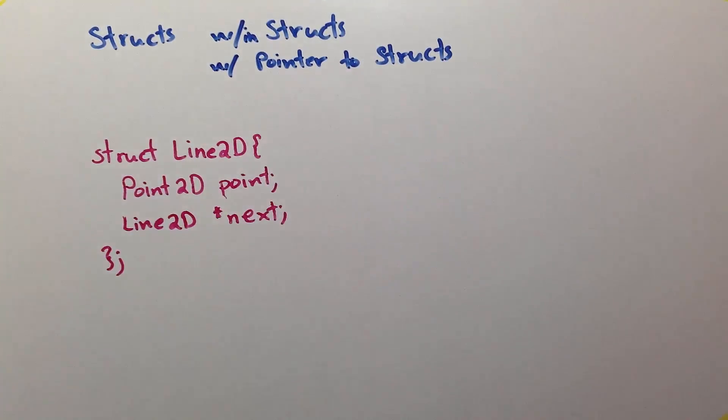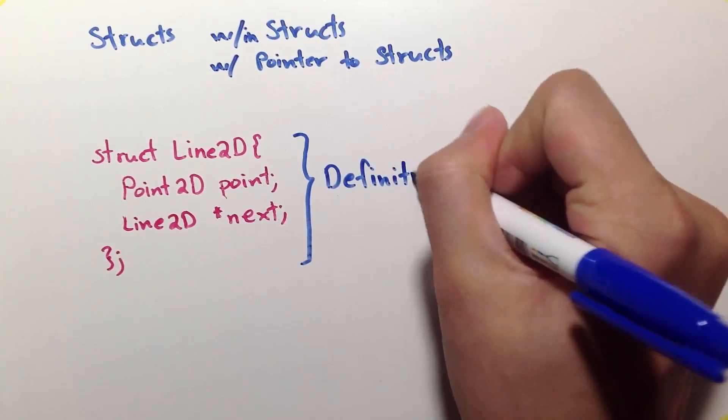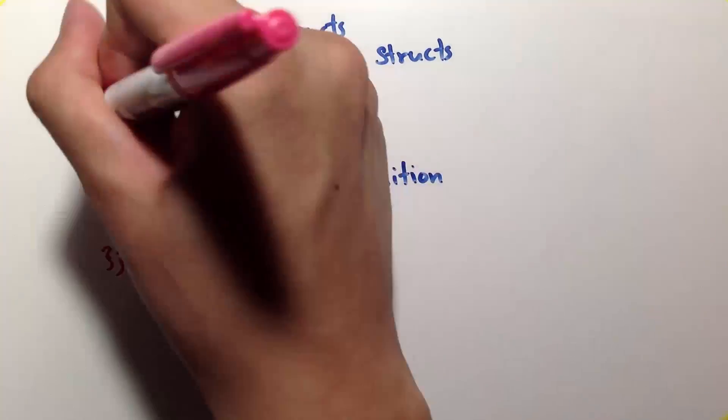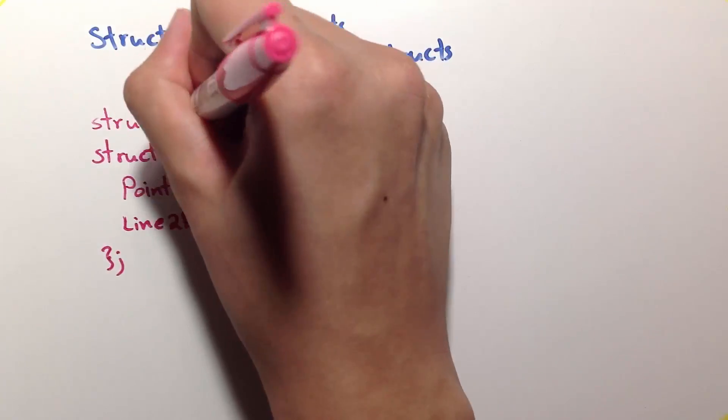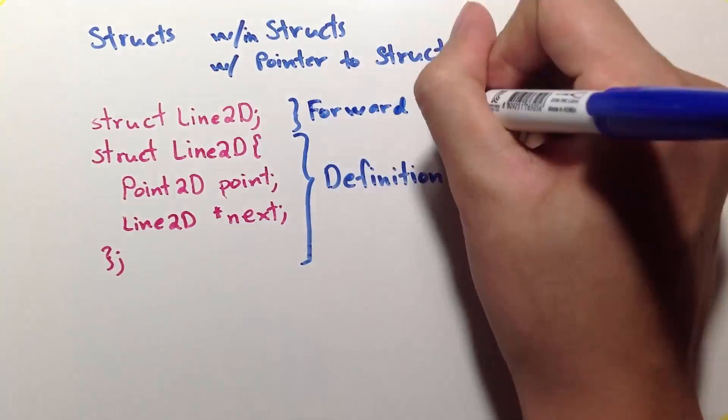Notice that I need to use the struct line2d in the definition of the struct itself. This is not allowed in C++ because the compiler will not know what a line2d is. Remember that the definition is where the contents of the struct are defined. We solve this issue by telling the compiler that a struct line2d exists and it will be defined later. This is what we call a forward declaration.